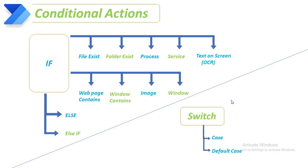When are we going to use if conditional actions? If a particular statement is true or false, in that case we are going to use if conditional actions. But for switch, it allows you to execute one block of code among many alternatives. For example, if I have grades for students — first class, second class, third class — in that case I would use switch case.